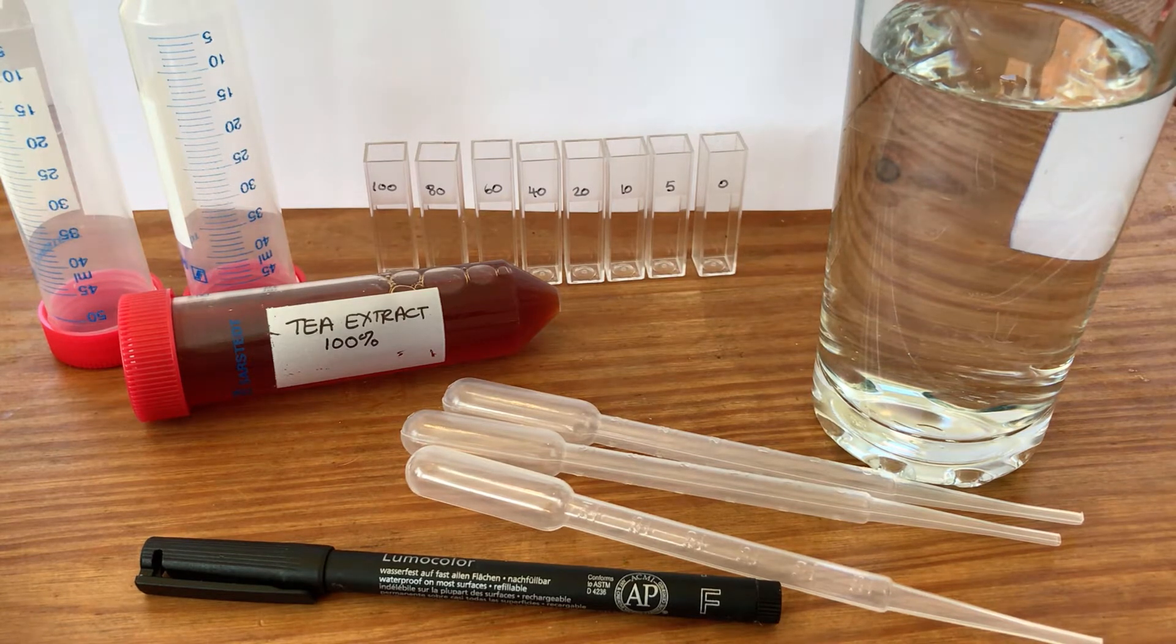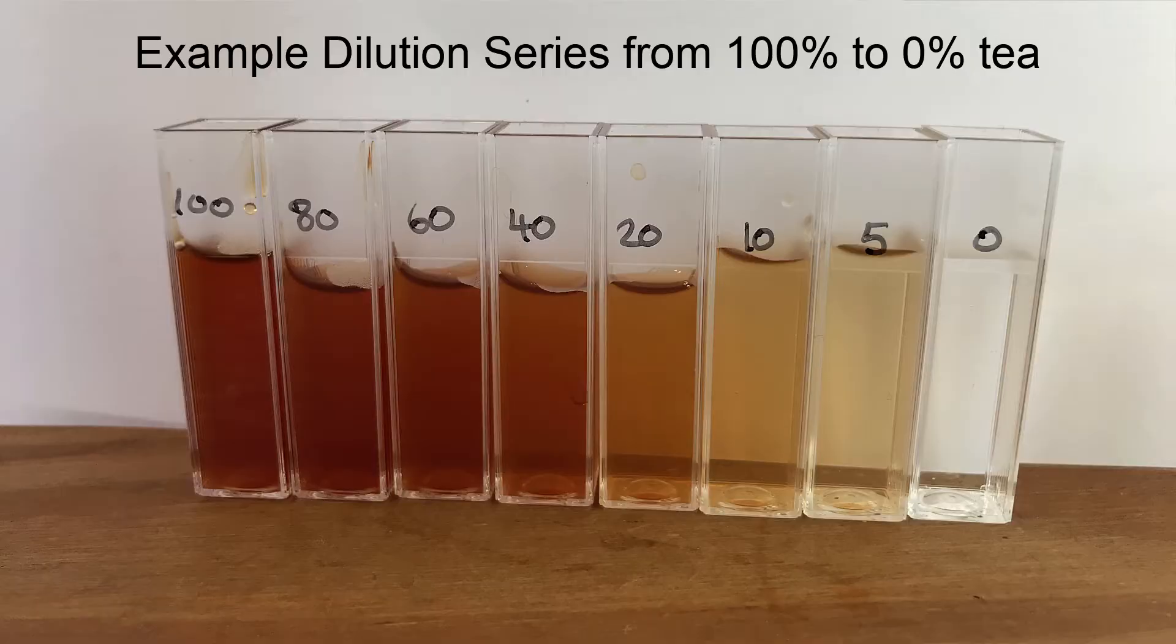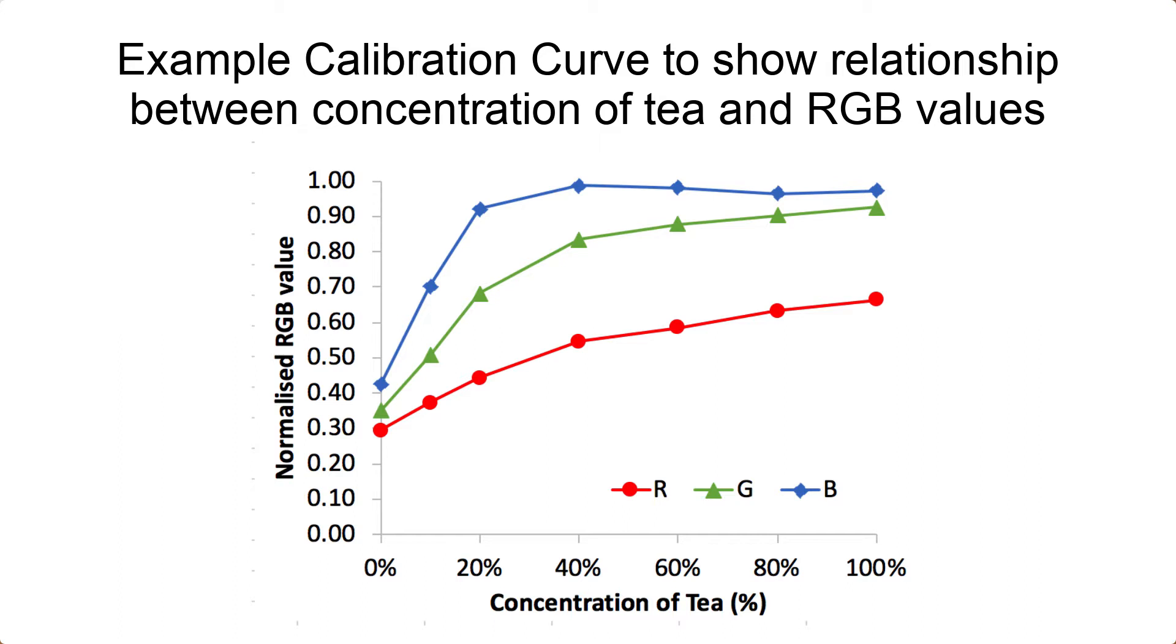What we're going to do is set up a range of different dilutions so that we can test those with our colorimeter. It's really important that we know the colorimeter can detect different concentrations reliably. Before we measure our biological extracts, we set up what's called a dilution series to check that there is a predictable relationship between concentration and our output, which in this case is the RGB values on our phones. That helps us be really sure that we're measuring the thing we think we're measuring.